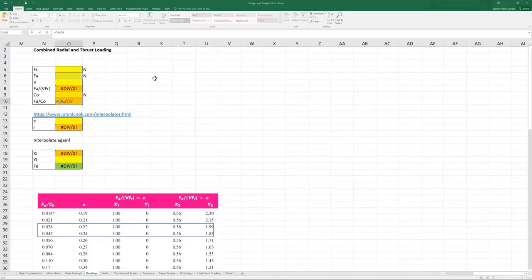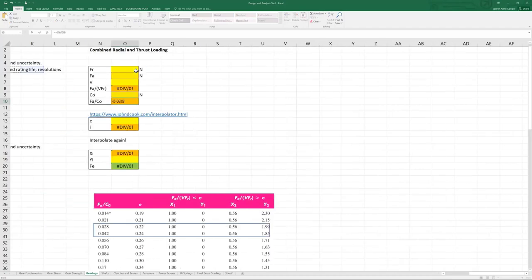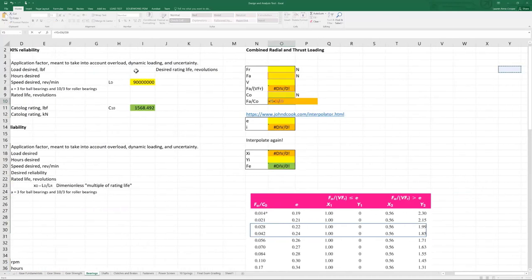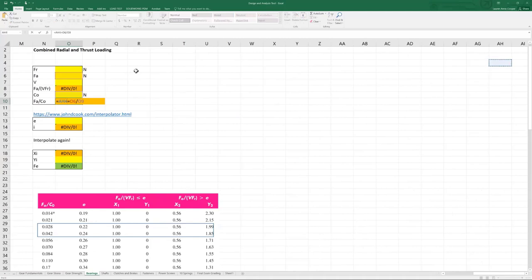Here is my analysis tool. You've seen it before for bearings. We've learned equation 11.3 and equation 11.10, and I'm just going to come over here to the section on combined radial and thrust loading and enter in the values that we have. Our radial load is 5 kilonewtons. Our axial load is 2 kilonewtons. We have inner ring rotation, so V equals 1. This FA over VFR ratio is an automatic calculation.